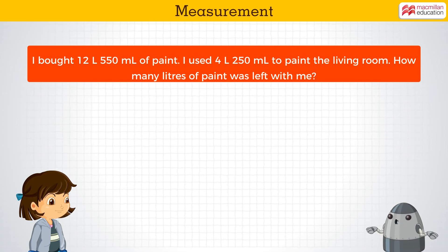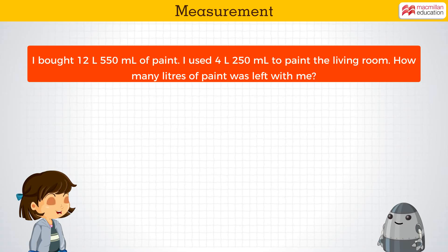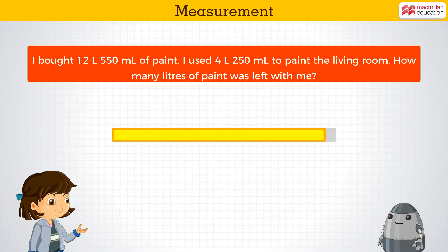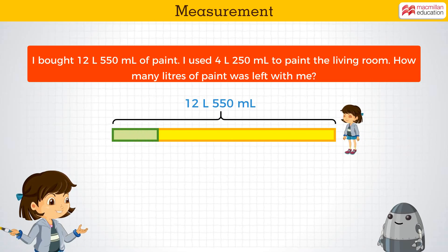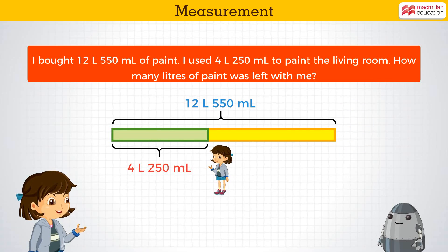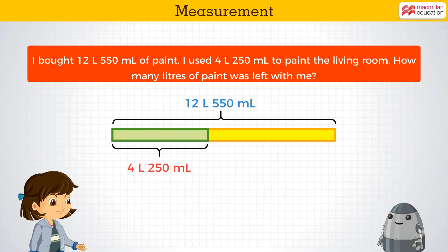That sounds like a problem on measurement of capacity. Right, Robo! Let's solve it now. First, we represent this problem using a bar model to understand it better. I had bought 12 liters and 550 ml of paint, so we make the entire bar as shown. I used 4 liters and 250 ml of paint only. See how it is marked in green here?